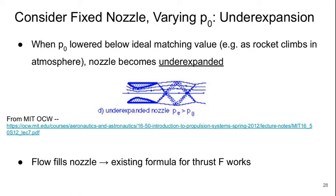Now let's consider the fixed nozzle with varying atmospheric pressure P-naught. First let's think about the case of under-expansion. Basically when P-naught is lowered below the ideal matching value, for example as a rocket is climbing up through the atmosphere, at some point the nozzle will become under-expanded. The exit pressure is higher than the atmospheric pressure and the flow will continue to expand downstream of the nozzle. But in this case the flow does fill the entire nozzle and our existing formula for the thrust works.